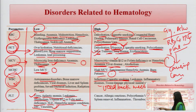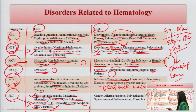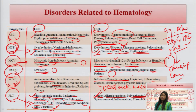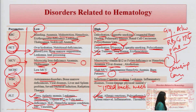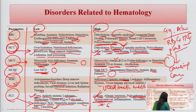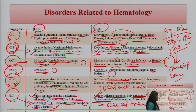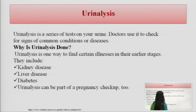Vasculitis — where vessels are inflamed — also lowers platelet levels. In contrast, high platelet levels are seen in cancer, allergic reactions, and polycythemia vera — where RBC, WBC, and platelet levels all increase. Spleen removal due to surgical trauma also causes an immediate increase in platelet levels.